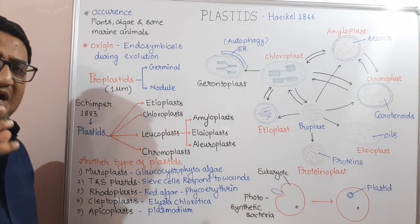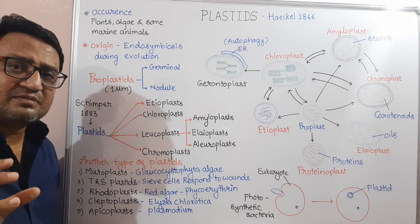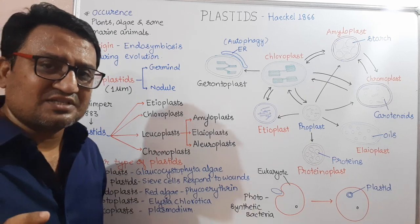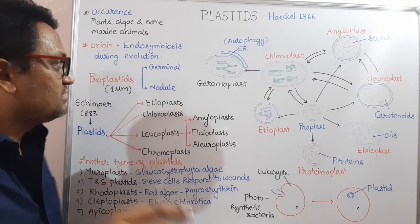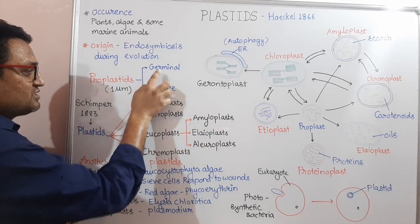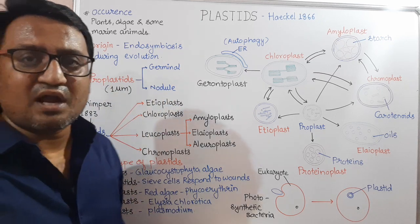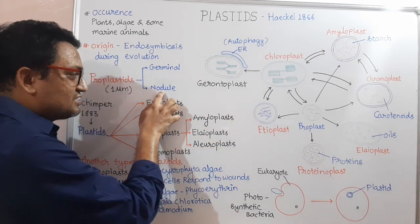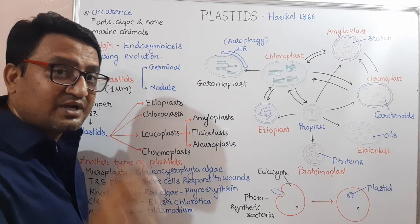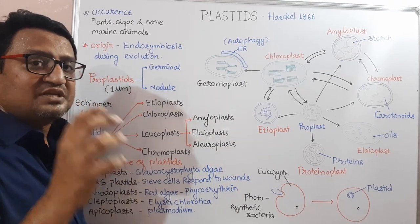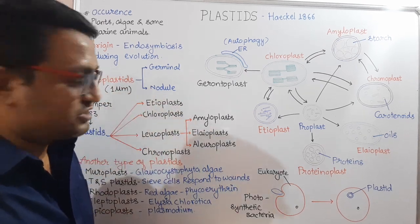Plastids are originated from Proplastids. Proplastids are present in meristematic cells. These Proplastids are rounded, circular, having one micrometer in diameter, and are of two types: Germinal Proplastids and Nodule Proplastids. Germinal Proplastids are present in plant embryos and seeds. Nodule Proplastids are present in root nodules. Germinal Proplastids also contain gibberellic acid which helps in meristematic metabolism, and Nodule Proplastids help in nitrogen fixation.